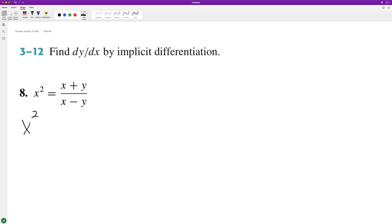So we'll have x squared times x minus y is equal to x plus y. We should end up with the same solution. Using the product rule on the left, we get 2x times x minus y is equal to...